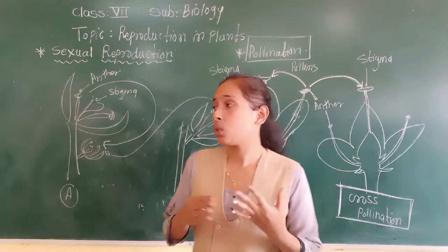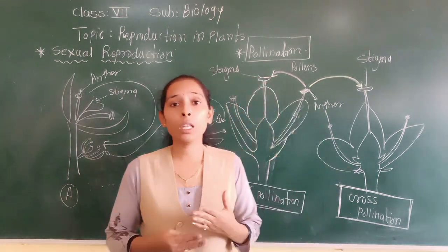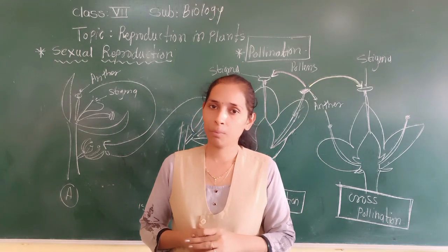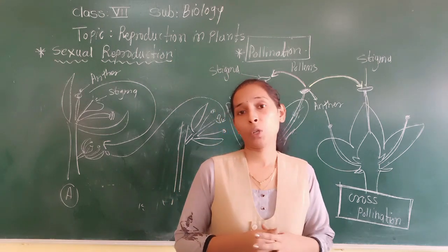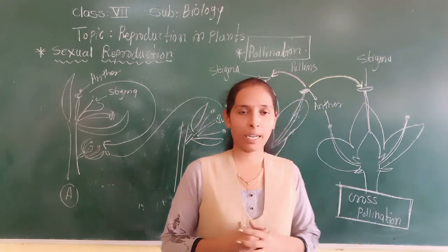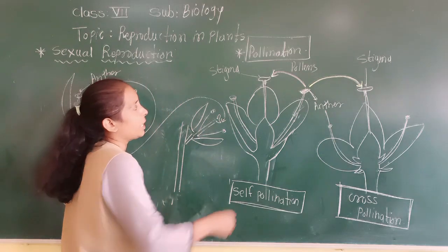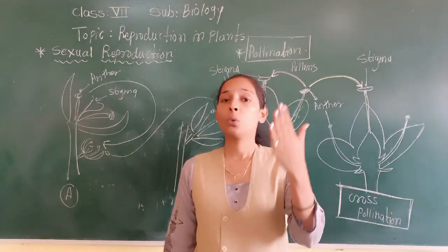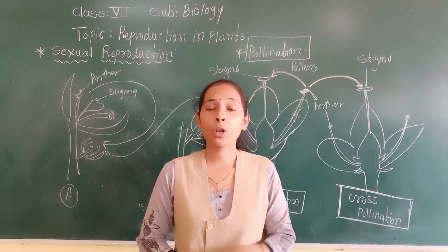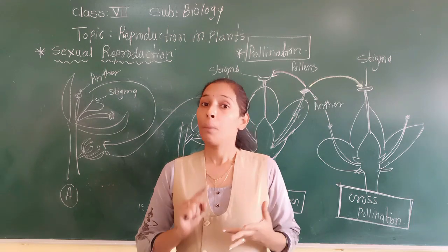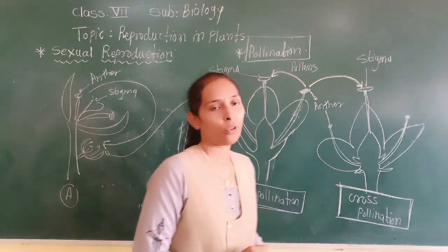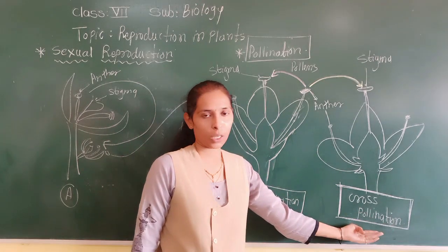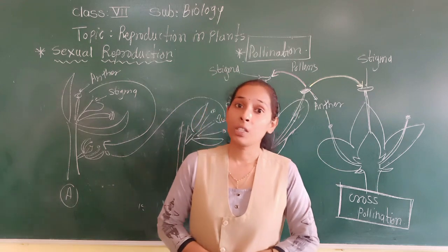So my dear students, this is all about today's lesson. Today we have discussed about sexual reproduction, and in that we discussed about the male and female reproductive parts of the flower. We also discussed about unisexual and bisexual flowers, and the very important topic of pollination — self-pollination and cross-pollination.